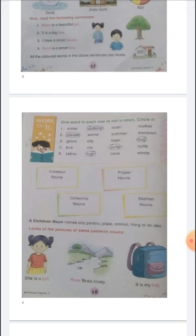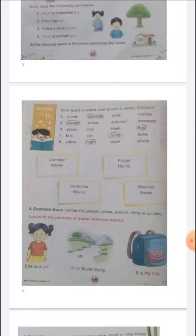Turn to page number 18 for this exercise. In each row, one word is not a noun — you have to circle it. In the first row: sister is a noun, walking is not a noun, room is a noun, mother is a noun. In the second row: please is not a noun, as 'please' is a word we use to make a request.